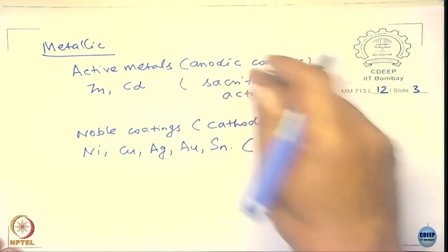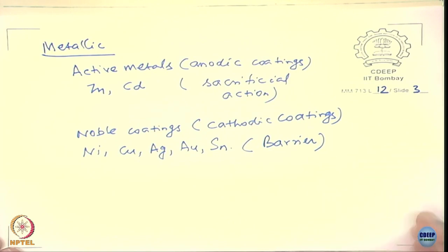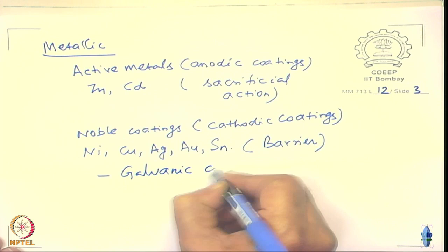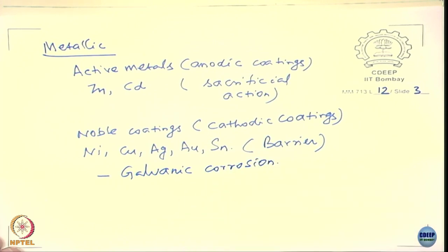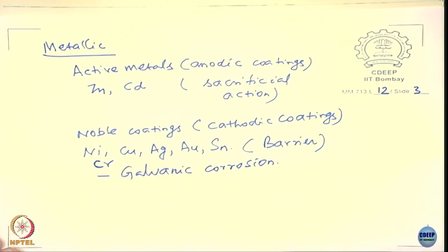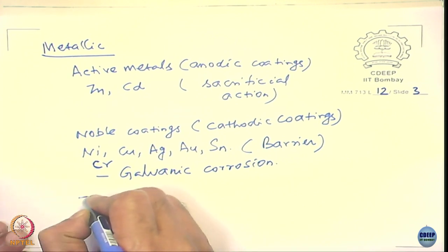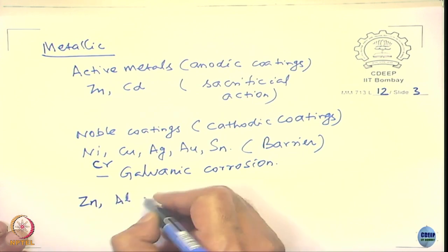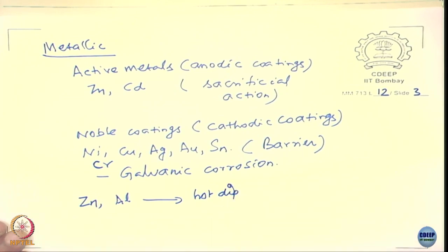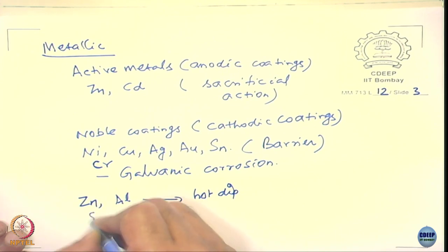Each of these coatings has advantages and disadvantages. Noble coatings can sometimes cause galvanic corrosion. But the surface can look very bright — a nickel coating makes the surface look bright, and you can also add chromium. Zinc and aluminum are used as hot dip coatings, and even tin can be used as a hot dip coating.